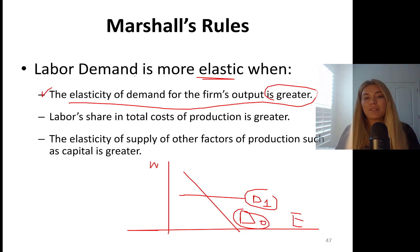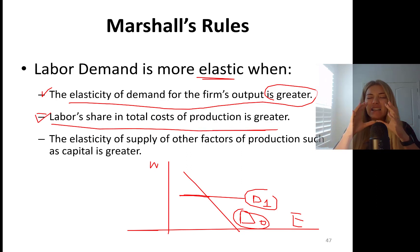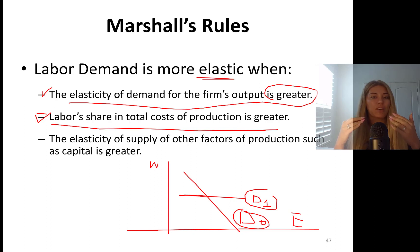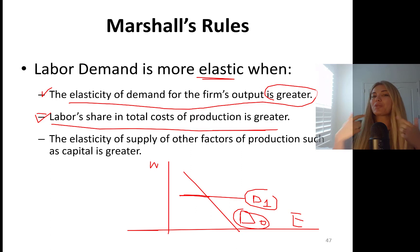Second, labor demand is more elastic when labor's share of the total cost of production is greater. So if labor makes up a huge part of my total cost — I am literally labor-intensive production, using fewer capital and lots of workers — then if the price of labor goes up, it's going to hit me more. So I'm going to respond more, meaning more elastic labor demand.